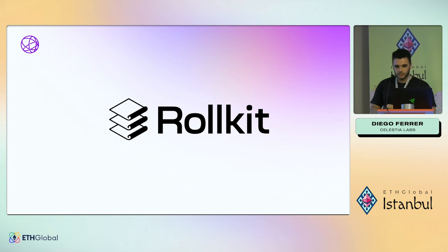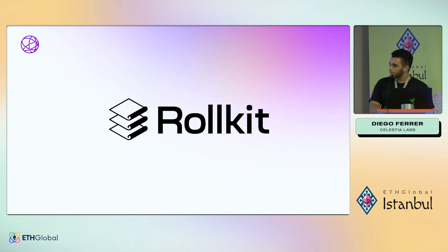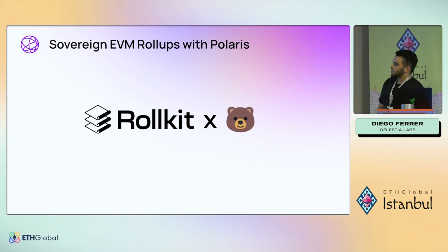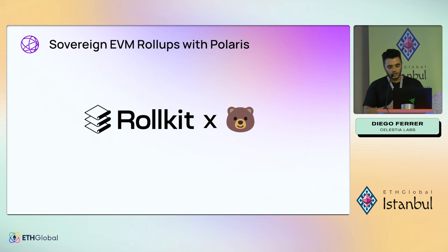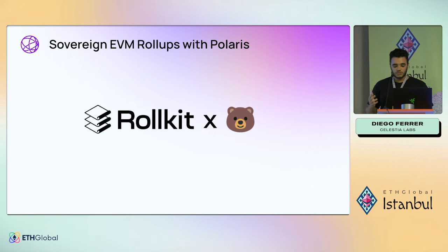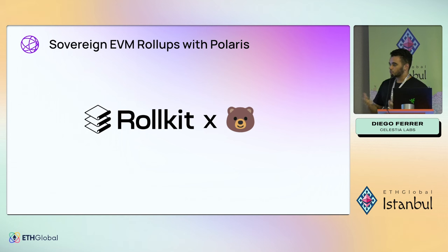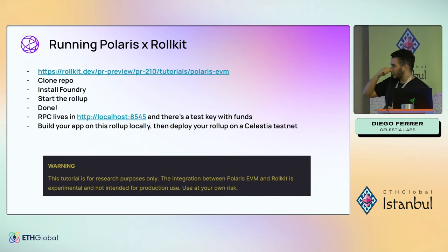At Celestia, some of the folks created a public-good library called rollkit that allows you to build sovereign rollups using the Cosmos SDK. More recently, we integrated rollkit with a framework called Polaris from the Berachain folks, which lets you build EVM blockchains. By combining rollkit with Polaris, we're able to run sovereign EVM rollups.